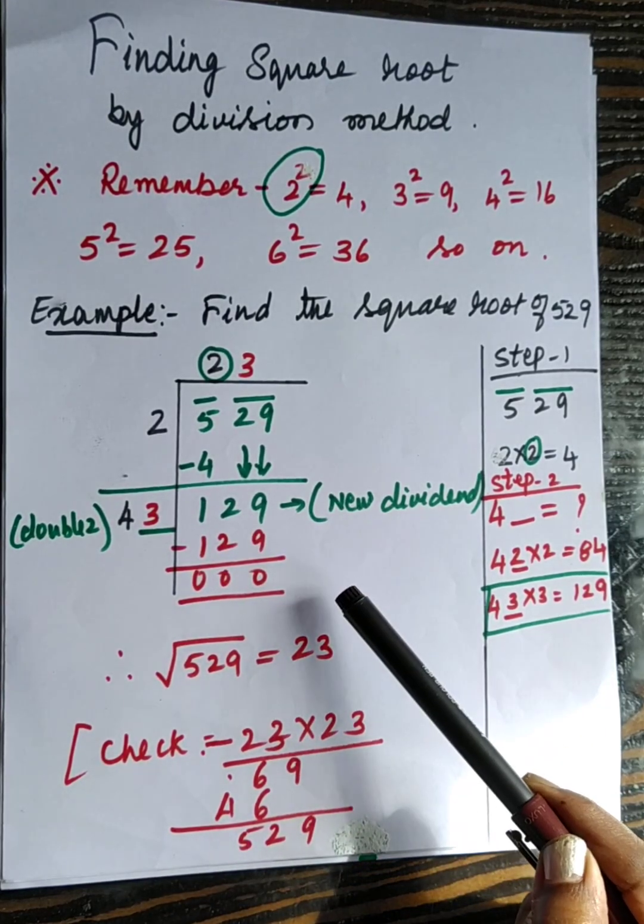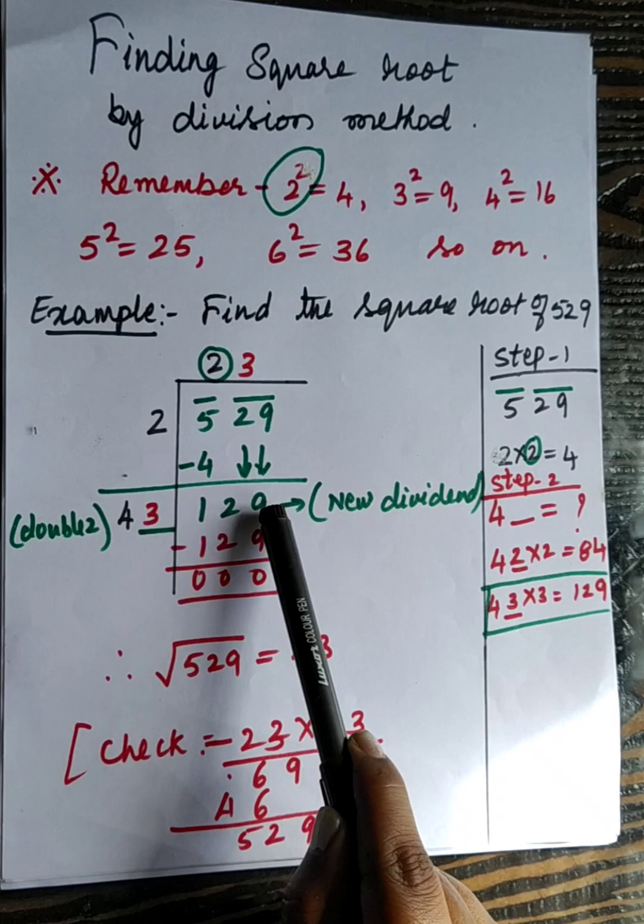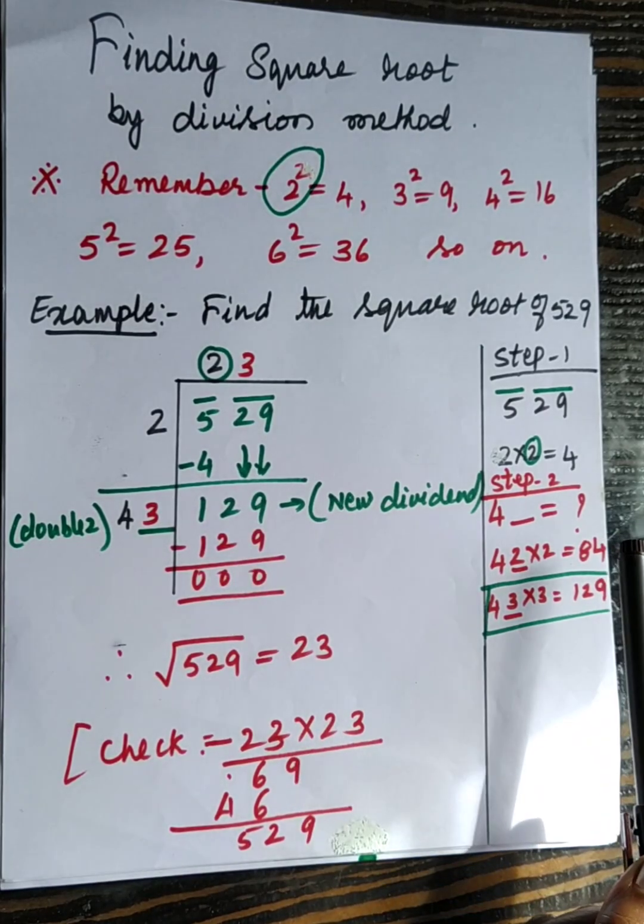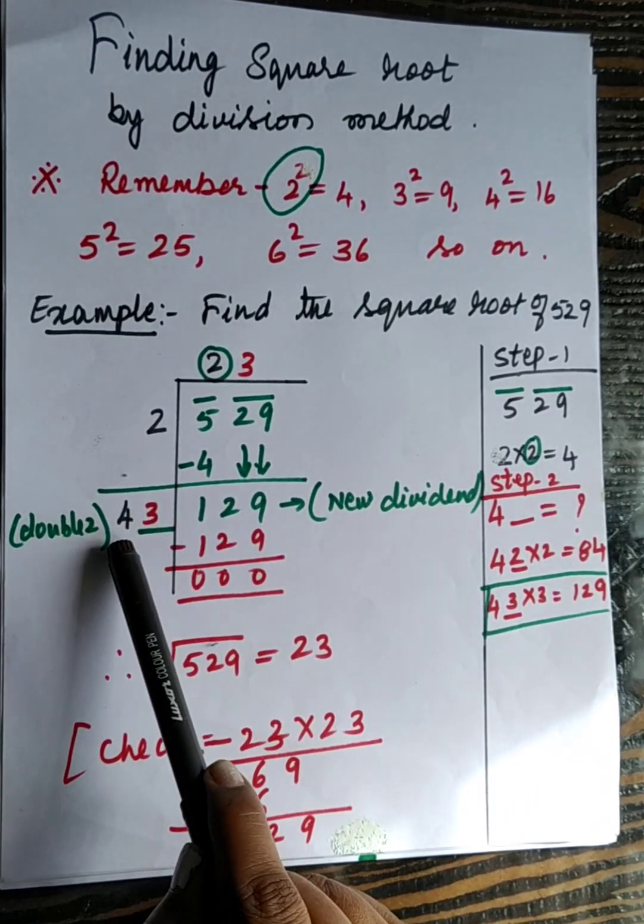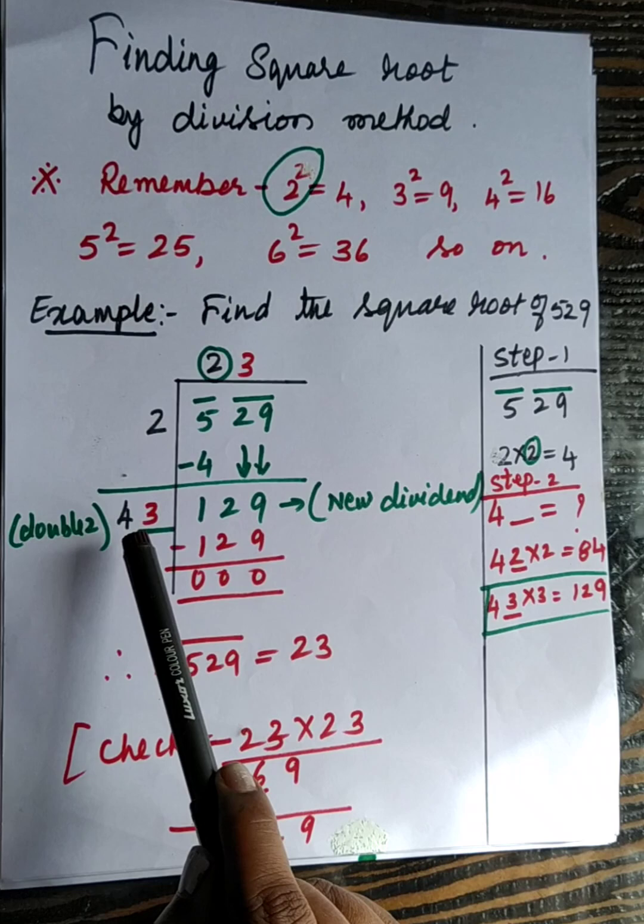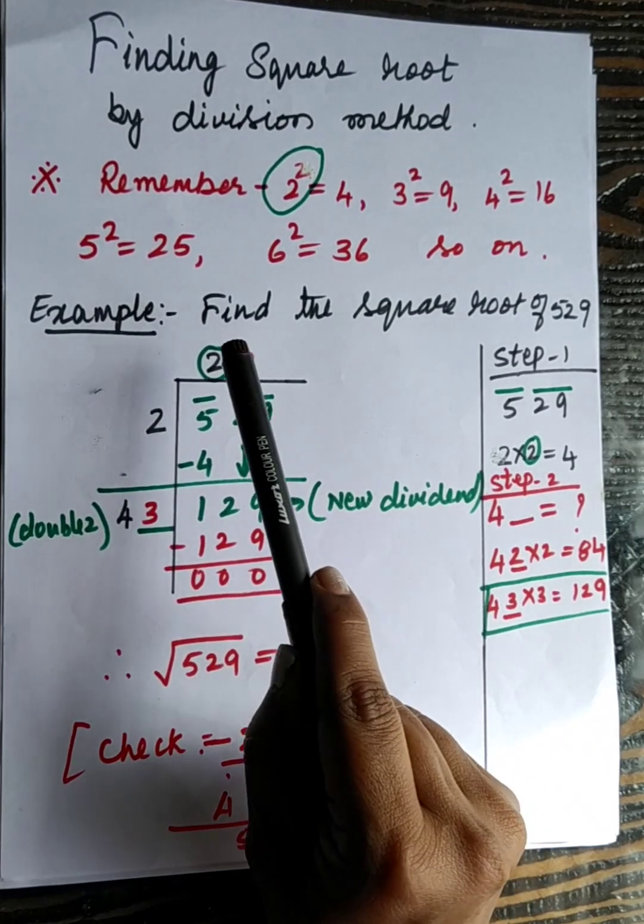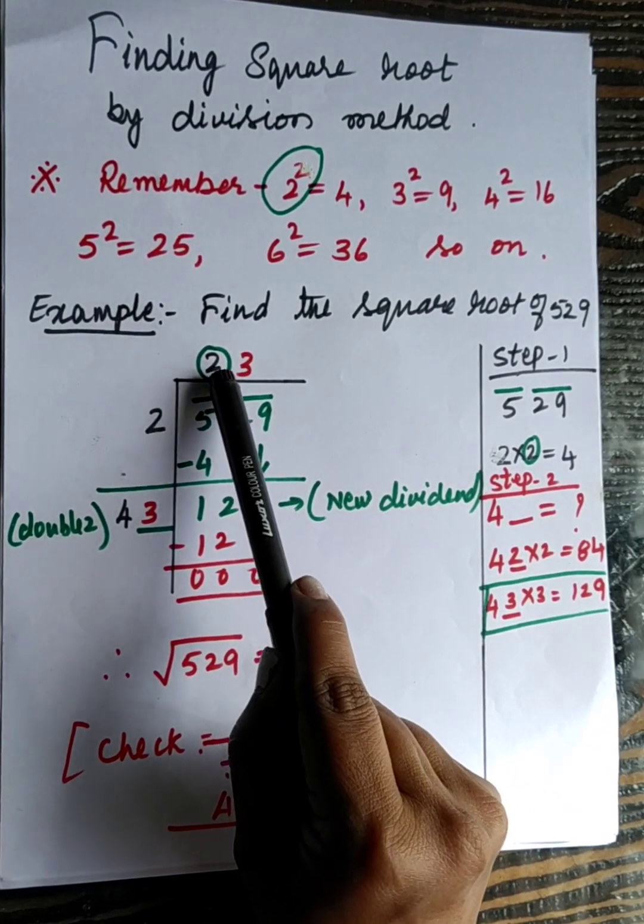Now second step, you have to divide 129. How to select the number? Here you have to take 4. How you should take 4? You have to double this quotient. 2 times 2 is 4.